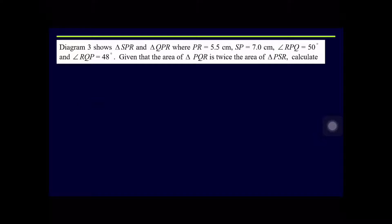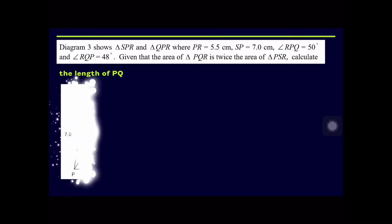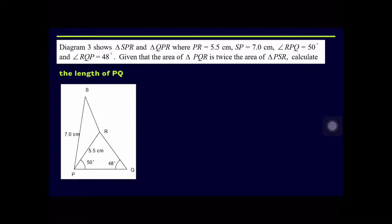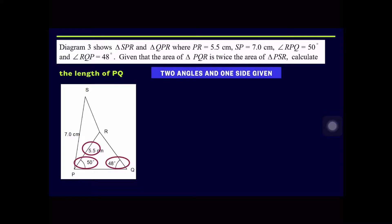For the second example, the diagram shows triangles SPR and QPR where PR = 5.5 cm, SP = 7 cm, angle RPQ = 50°, and angle RQP = 48°. Given that the area of triangle PQR is twice the area of triangle PSR, we need to calculate the length of PQ. In triangle PQR, the information given is two angles and one side, so we can apply the sine rule.